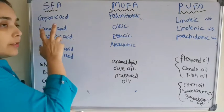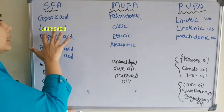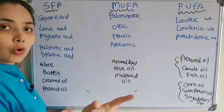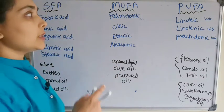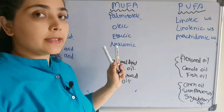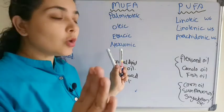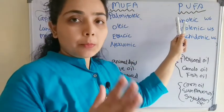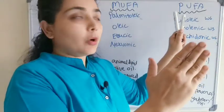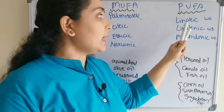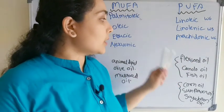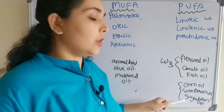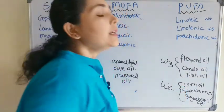Examples and sources: Saturated fatty acids include caproic acid, lauric acid, myristic acid, palmitic acid, and stearic acid — sources include ghee, butter, coconut oil, and peanut oil. Monounsaturated fatty acids include palmitoleic acid, oleic acid, erucic acid, and nervonic acid — sources include animal lipids, olive oil, and mustard oil. Polyunsaturated fatty acids include linoleic acid, linolenic acid, and arachidonic acid — sources include flaxseed oil and canola oil (omega-3 type) and corn oil, sunflower oil, and soybean oil (omega-6 type).